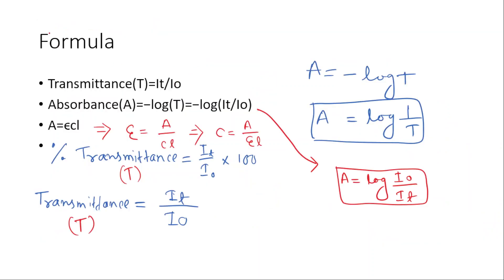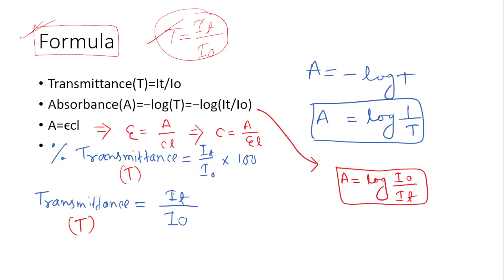Now let us look at the formulas. Transmittance T is equal to It divided by I0 — that is, transmitted light upon incidence light. Absorbance is equal to εCL by Beer-Lambert Law, and also A equals negative log of T.